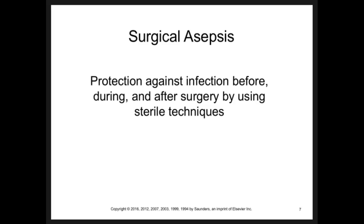Surgical asepsis is protecting against infection before, during, and after surgery by using sterile techniques. That means you have sterile fields, sterile rooms, sterile equipment, and techniques — including the room temperature, which is usually pretty cold in surgery. All of these help protect against infections when the patient is really vulnerable during a surgery.